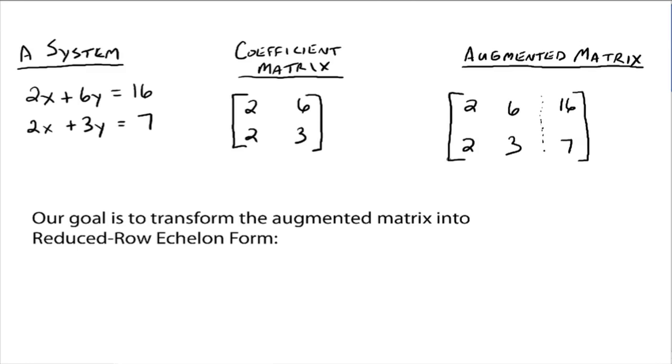Alright, so now, that's our plan. This is called an augmented matrix. You can take any system, any system of linear equations, and rewrite it in its augmented form. You should also be able to take a matrix that's in augmented form, and write its corresponding system. This would be 2x plus 6y equals 16, and 2x plus 3y equals 7. So that's what our system would look like.